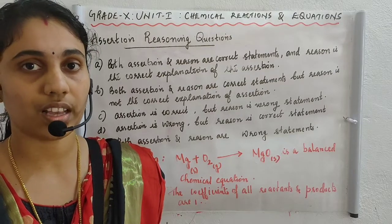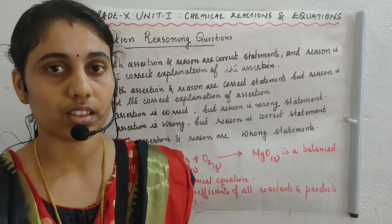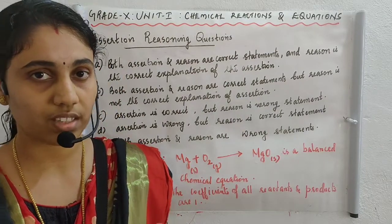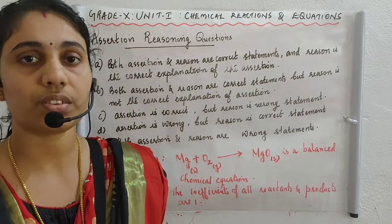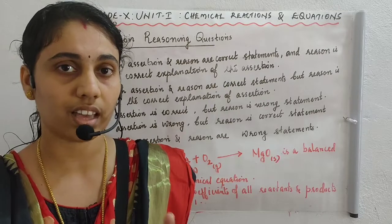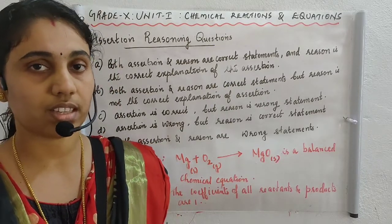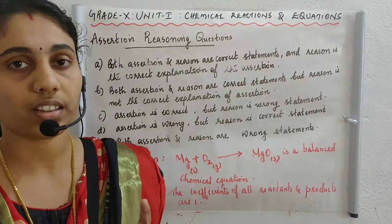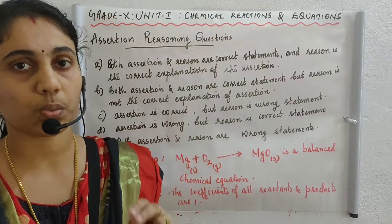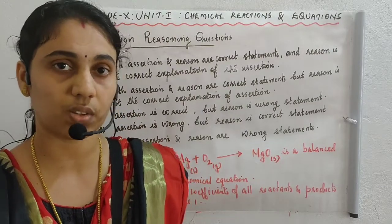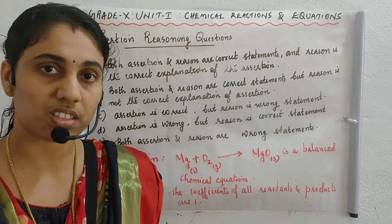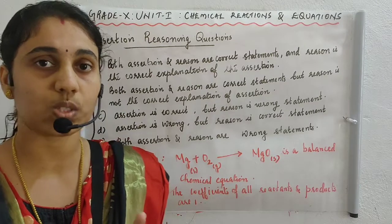Today I wish to discuss the latest question paper pattern — the CBSE 2019-20 Grade 10 science question paper. The theory paper is out of 80 marks, and the first 20 questions are objective questions, each carrying 1 mark. In CBSE 2019-20, two assertion-reasoning questions were asked from this section.